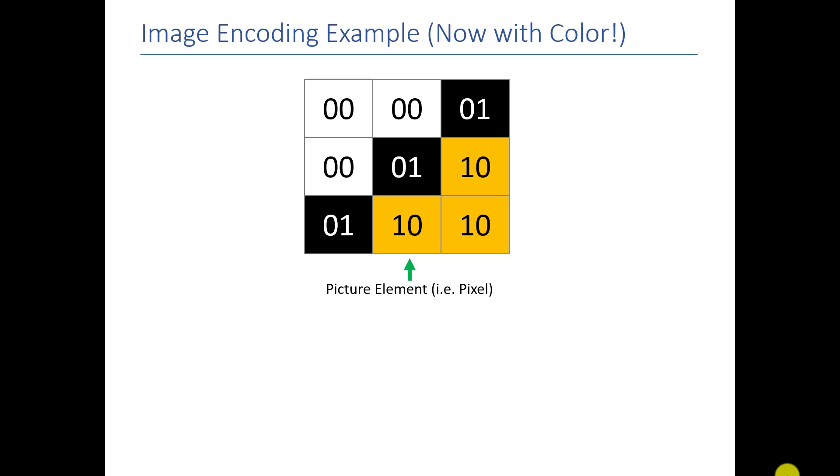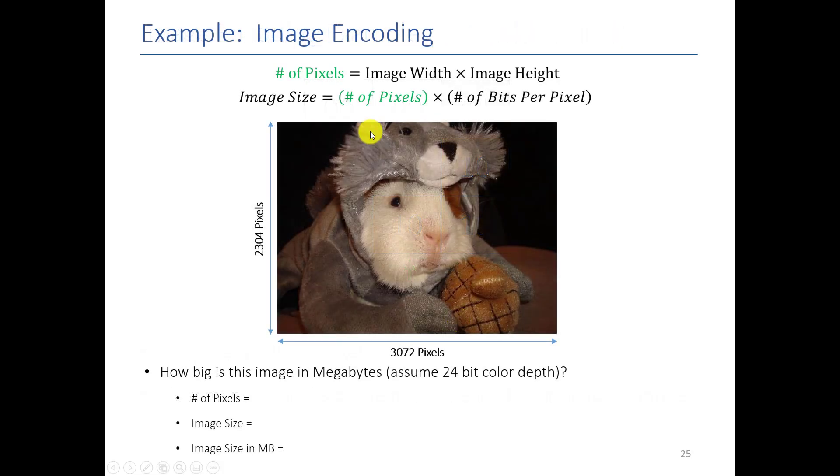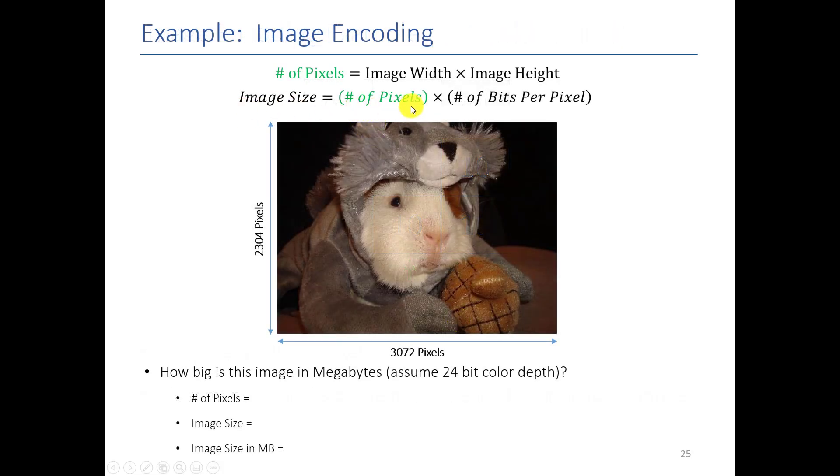It doesn't change when we have color. The only thing that changes is the number of bits per pixel. So in this case, I have three colors. And if you remember, I can represent three things with two bits, because 2 to the 2 is 4, which is more than 3. So here I have two bits per pixel. And then how many bits do I need to encode this picture? All I do is say, it's two bits per pixel times nine pixels, which is 18 bits. So this, in essence, is how you calculate the size of an image. The size of an image is the number of pixels times the number of bits per pixel.